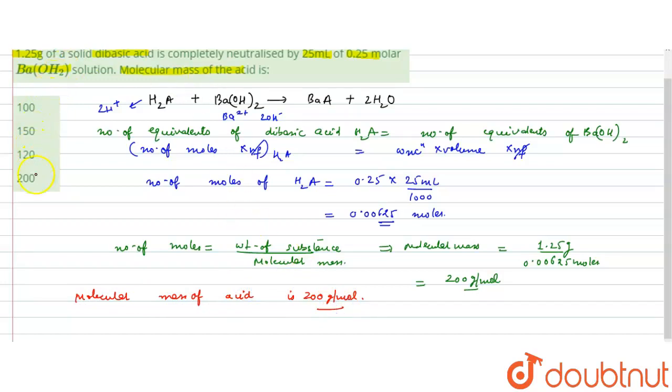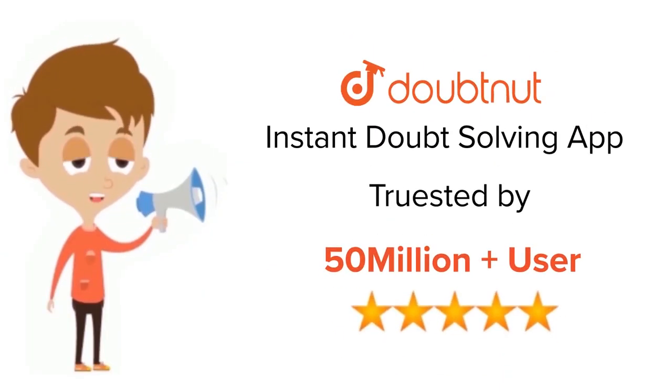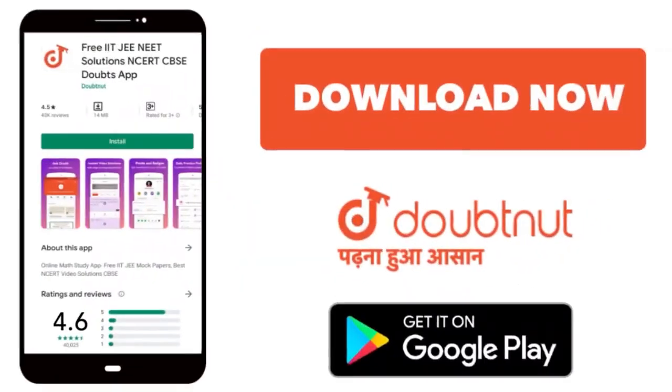So the correct option is the fourth option. So I hope you understand. For class 6-12, IIT-JEE and NEET level, trusted by more than 5 crore students, download Doubtnet app today.